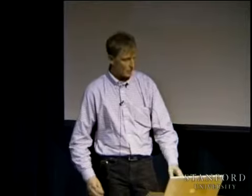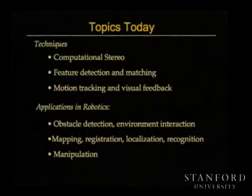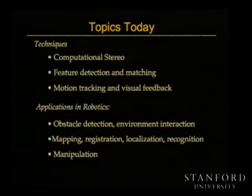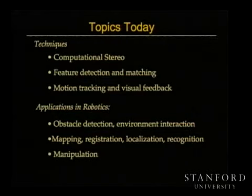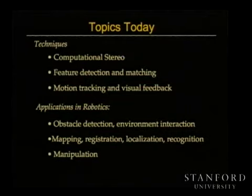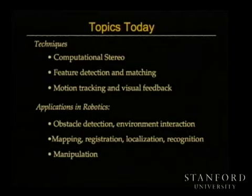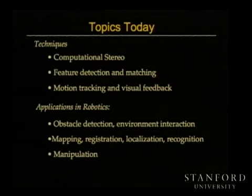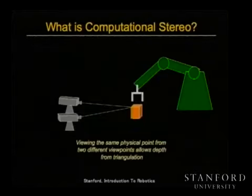The topics I've chosen go from bottom to top, from low-level to higher-level capabilities. First, computational stereo — a way of getting the geometry of the environment around you. Second, feature detection and matching — a way of starting to identify objects and where you are. Third, motion tracking and visual feedback — how do you actually use information from vision to manipulate the world.